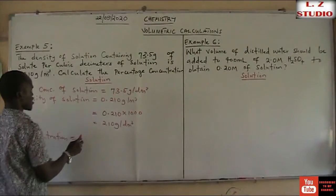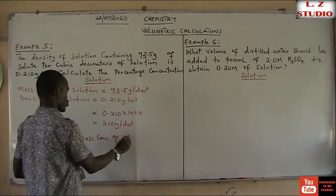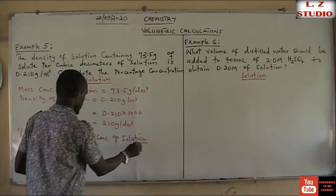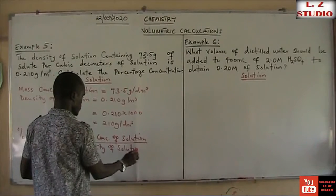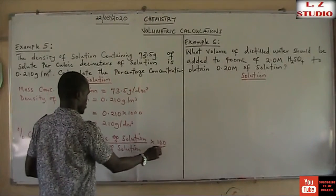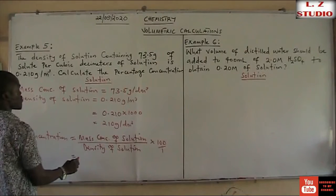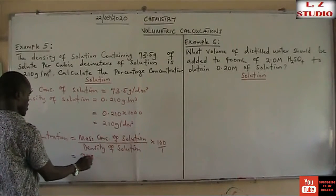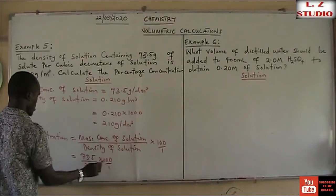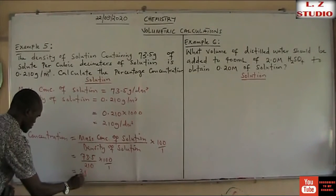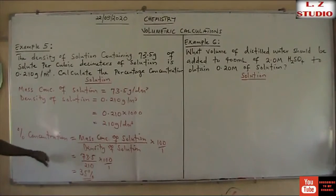We have mass concentration of solution divided by density of the solution, then multiplied by 100. So this is: 73.5 divided by 210, times 100, which gives us 35% as our final answer. That is how to calculate percentage concentration — very simple and easy.